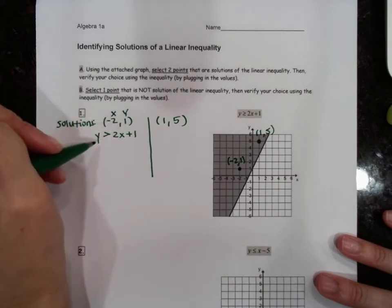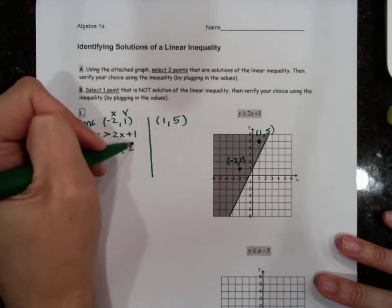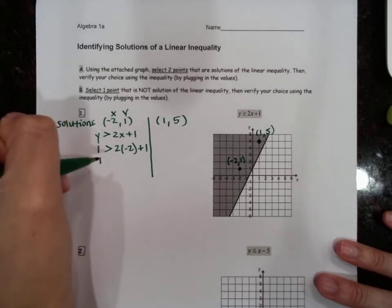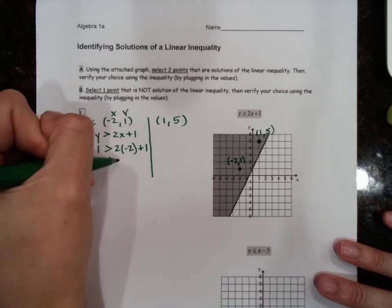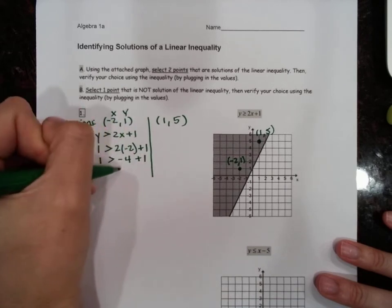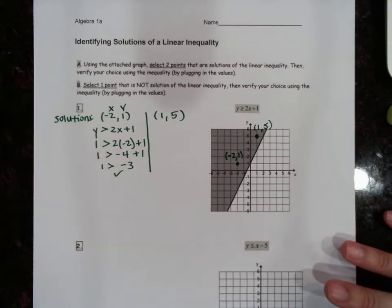So we plug in 1 for y: is 1 greater than 2 times x, which is -2, plus 1? So 1 is greater than 2 times -2, which is -4, plus 1, which is -3. Yes! And that's why it's in the shaded region, because it makes that inequality true.